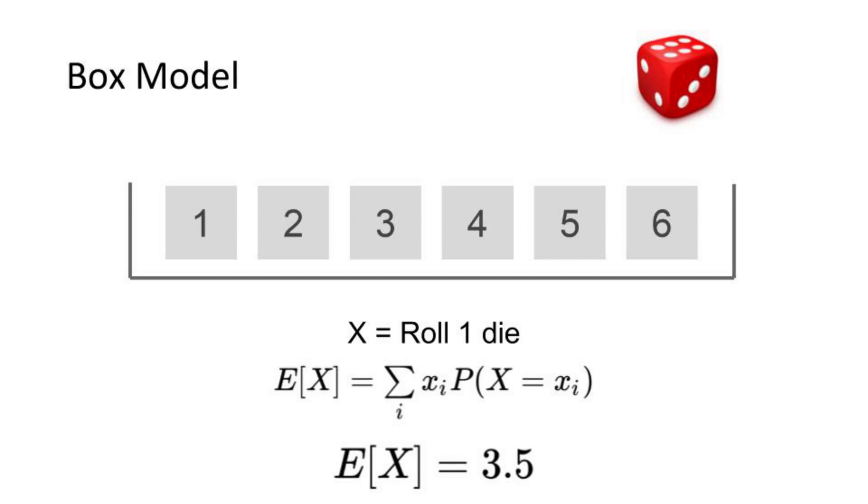A popular way to draw out these expected value outcomes is with a box model. With this you can easily visualize harder problems by just throwing all the possible outcomes into a box and writing the probabilities of each outcome next to the value.